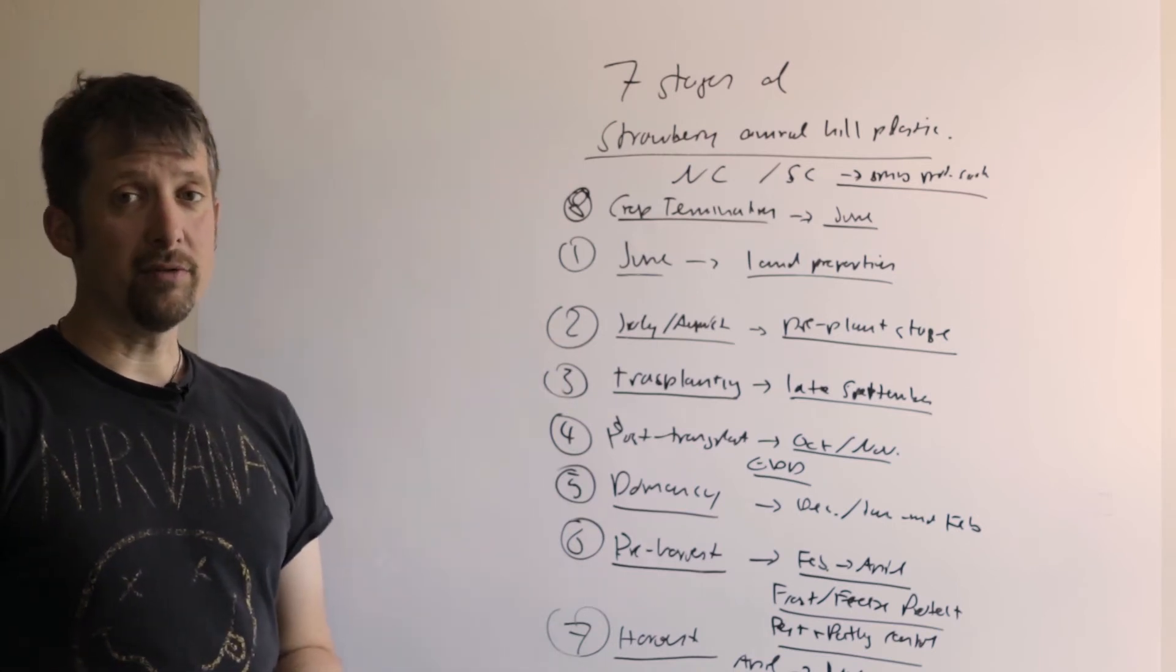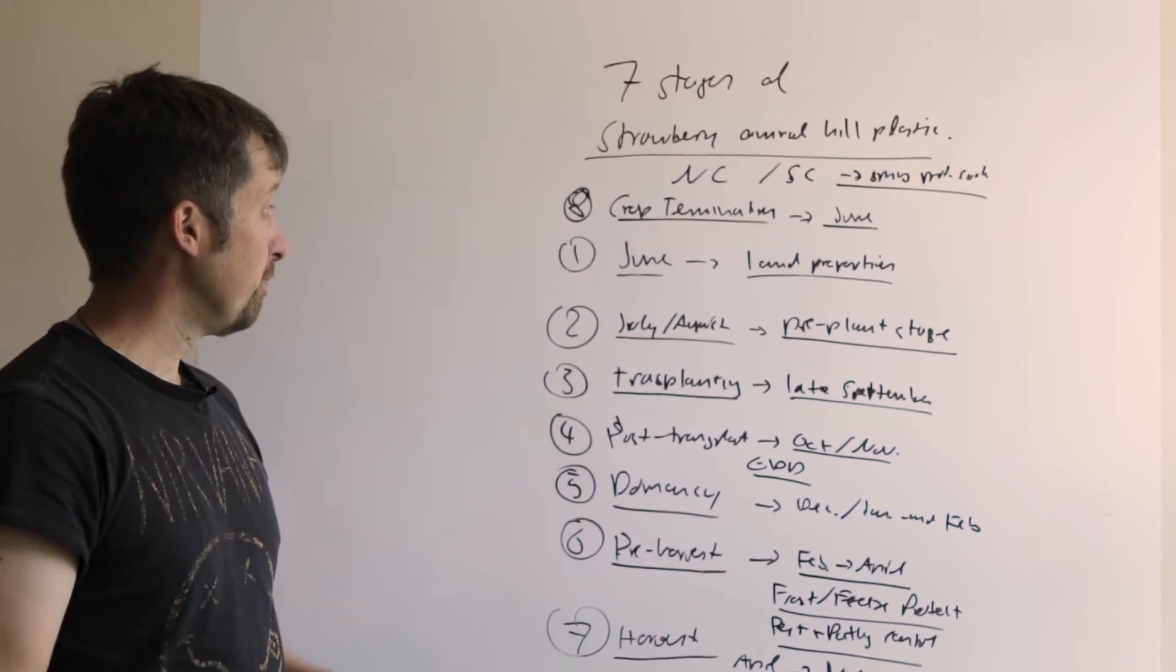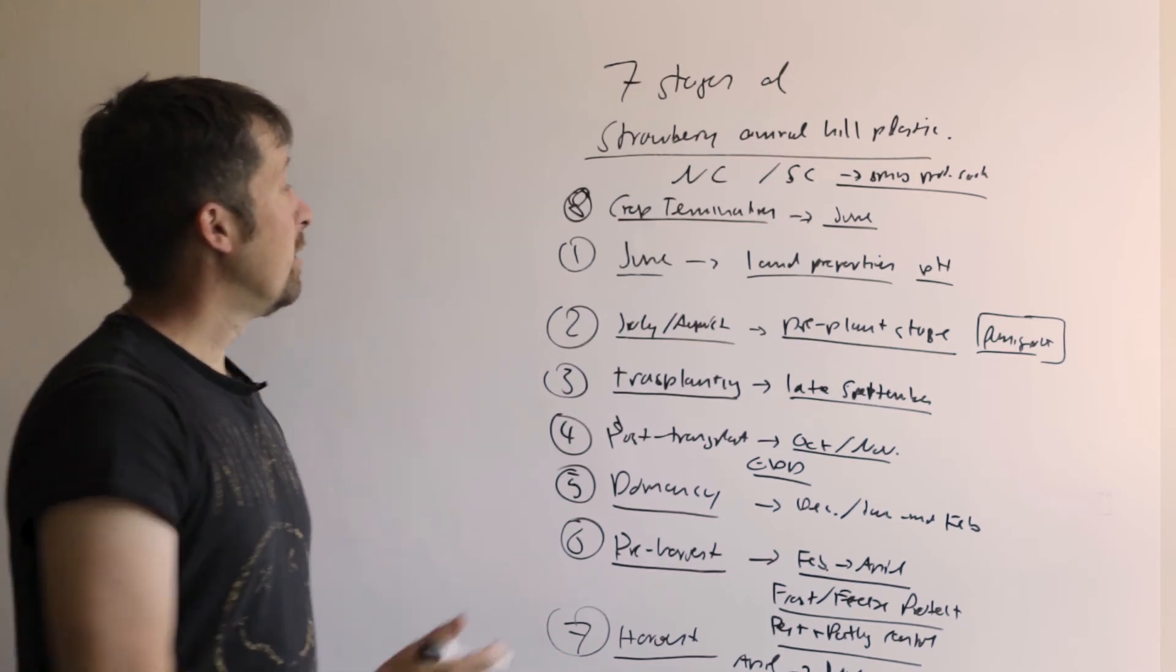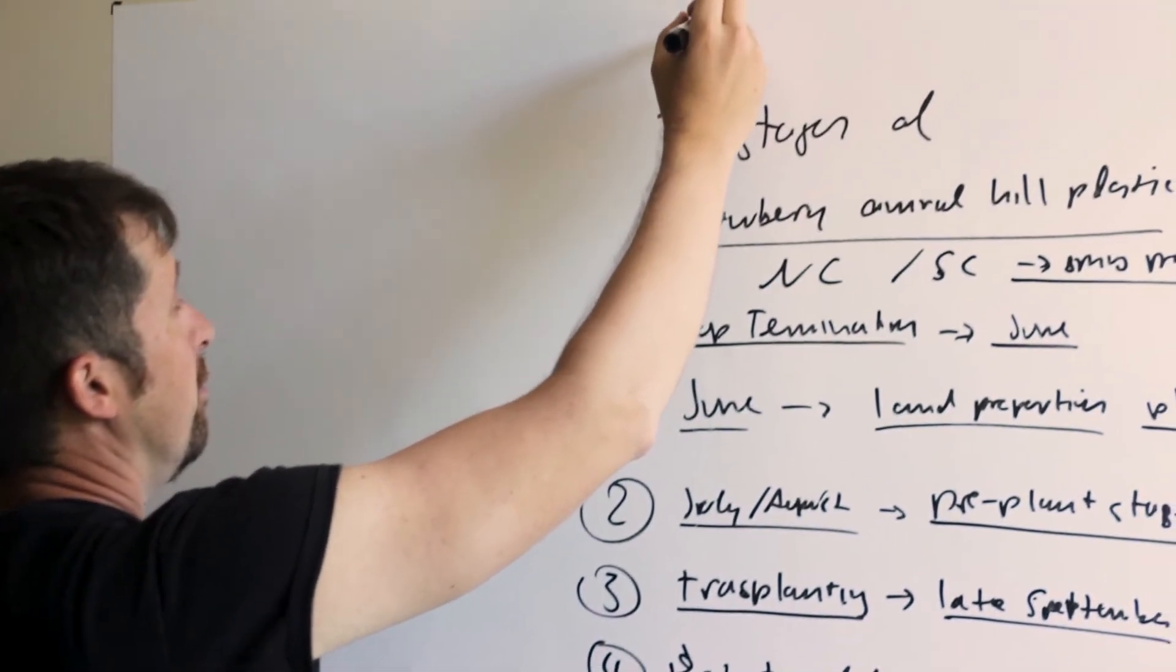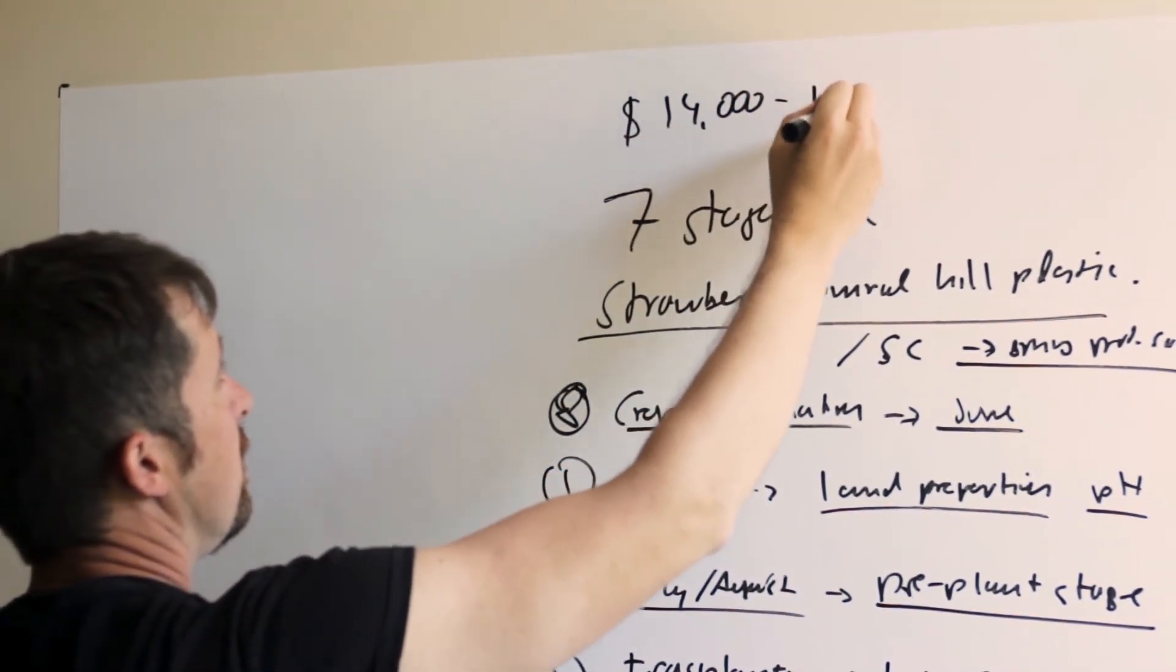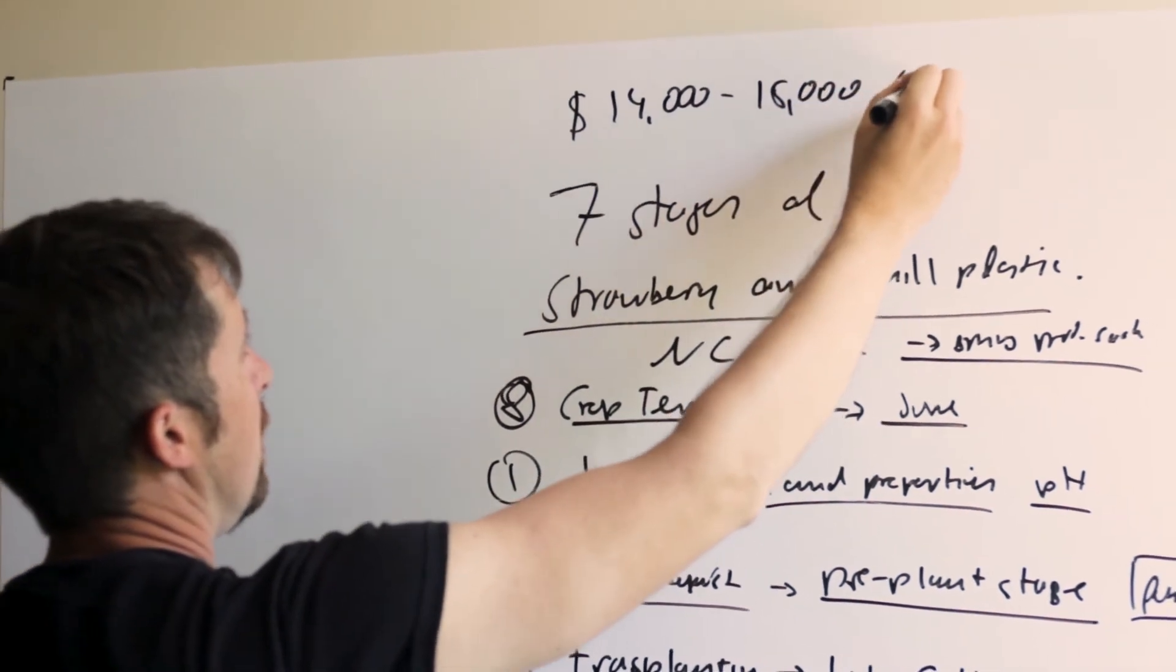Our estimated costs right now for this whole cycle are running between 14 and 15 thousand dollars per acre. That includes pesticides and labor.